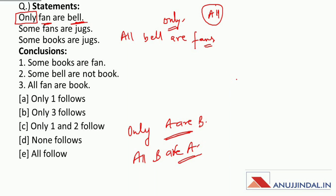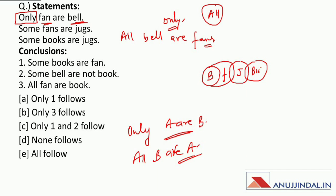Since 'only fan are bel', which means all bel are fans. Now some fans are jugs and some books are jugs. This is the possible Venn diagram of the given statements. Now conclusion number one is: some books are fans. Between book and fan there is no direct relation, which means we can't say about this conclusion. Therefore this conclusion will be incorrect.